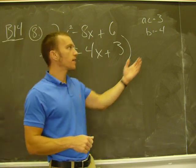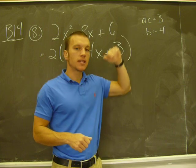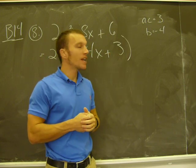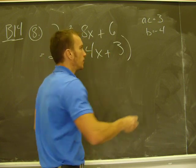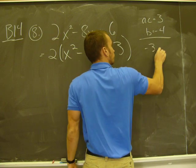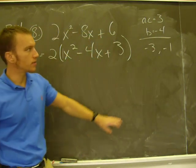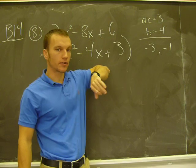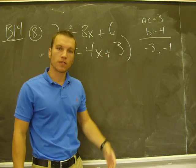So two numbers that multiply together to give me 3 and add together to give me negative 4 should be negative 3 and negative 1. That's my two numbers. They satisfy those conditions. They multiply together to give me positive 3 and add together to give me negative 4.